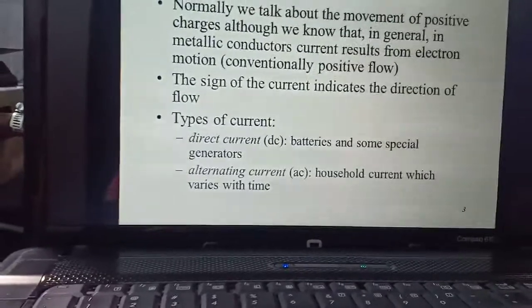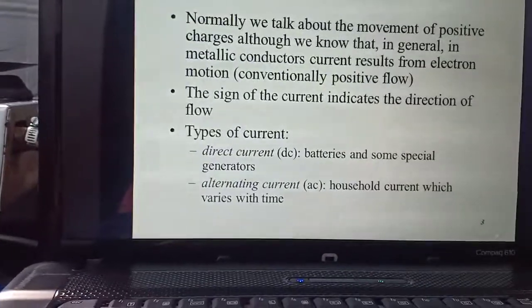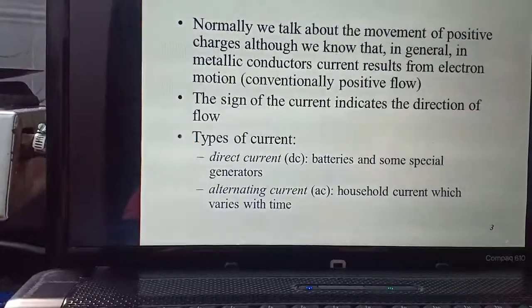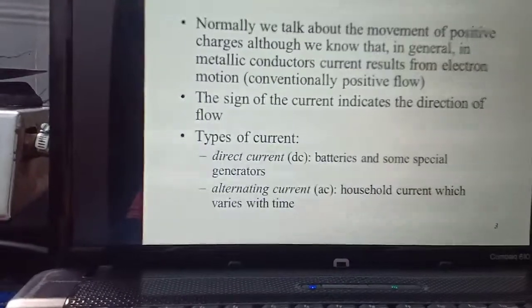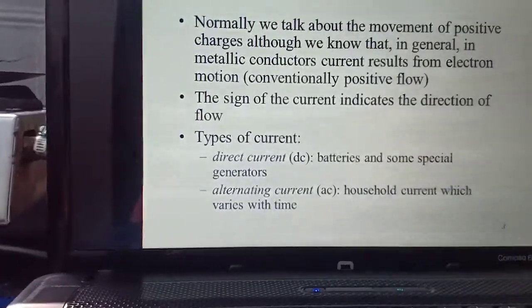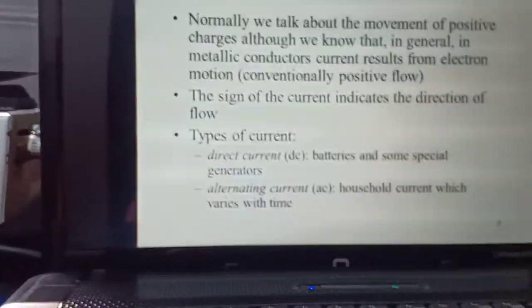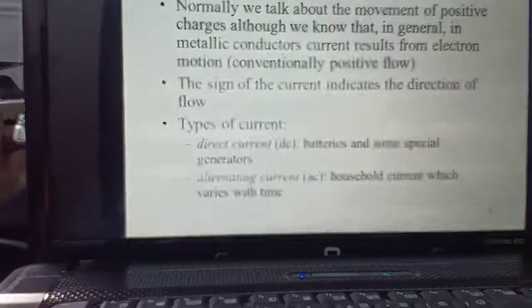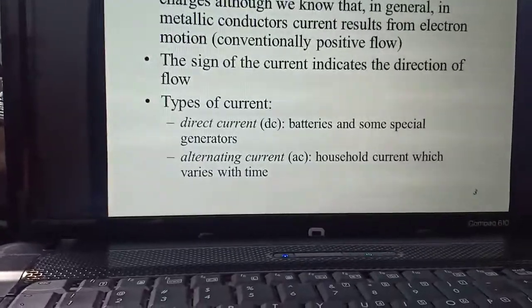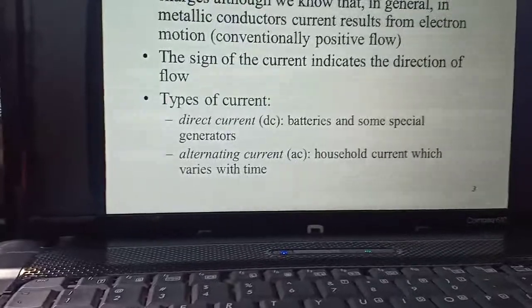So now let's talk about current. We normally know the movement of charges in metallic conductors is the result of electron motion. So in a conductor, electrons move. That movement of electrons is current. The sign of the current indicates the direction of flow. The current sign, plus or minus, indicates its direction, whether it is going in right direction or left direction. We'll be studying that later on.